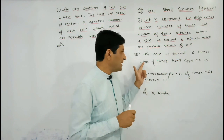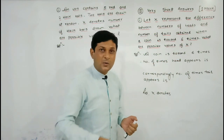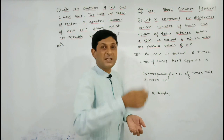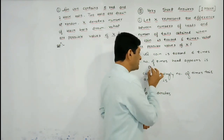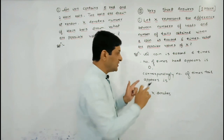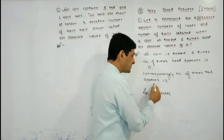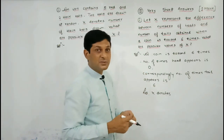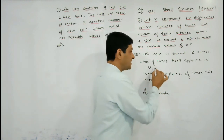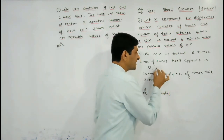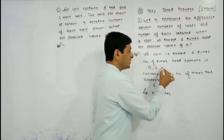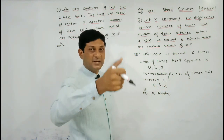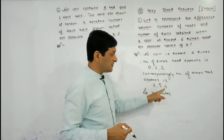When a coin is tossed six times, it is possible that all six times tail appears, meaning number of heads is zero and correspondingly number of tails will be six. Or it may be that five times tail appeared, meaning head came once. Or two times head appeared, so in the remaining four times, tail appeared.